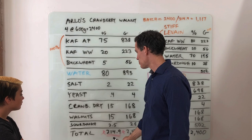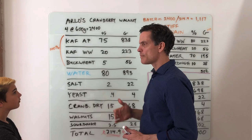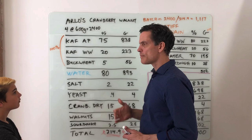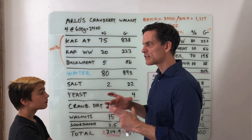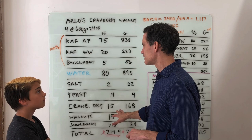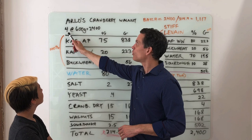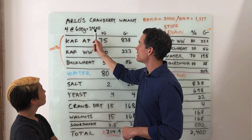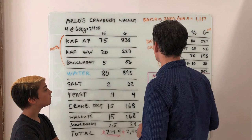The total dough percentage is 214.9%. We discussed loaf size and decided on 600 grams — about 22 ounces — which is a decent-sized loaf. Because it has amendments like cranberries and walnuts, it'll be a little heavier. We decided to do a four-loaf batch, so four loaves at 600 grams each means the total amount of dough in the bowl will be 2,400 grams.